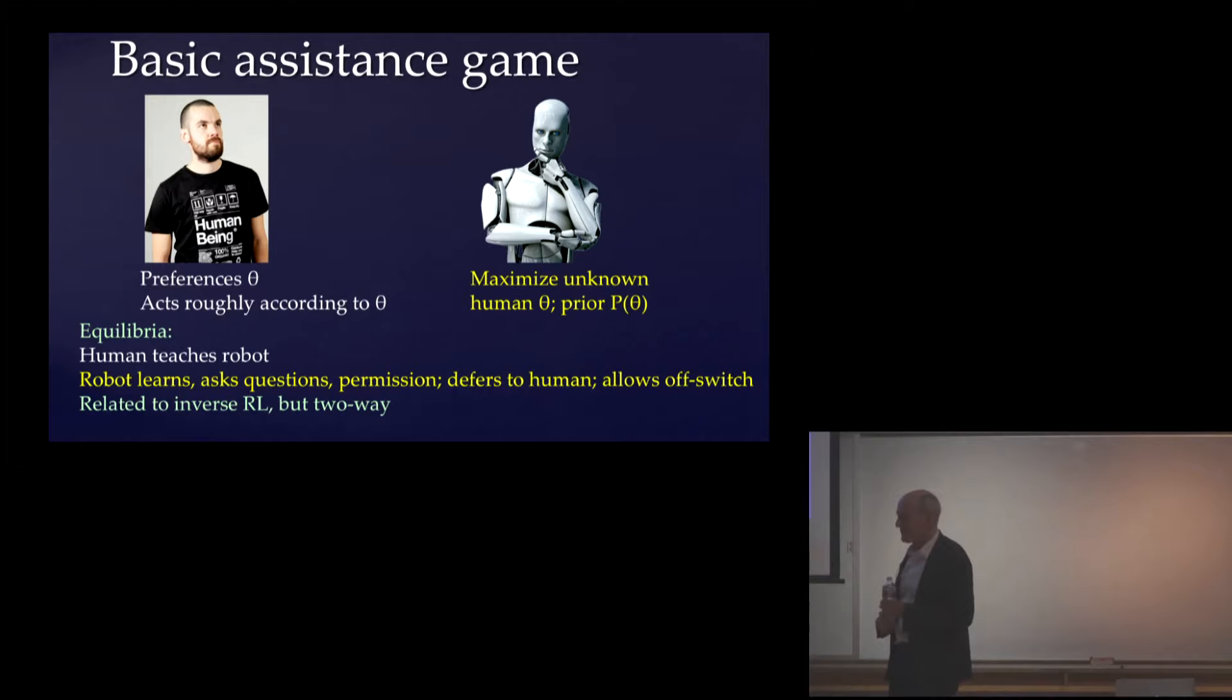So I'm going to talk about these assistance games. Remember the human is the one with the preferences. We'll call the preference theta generically. And we assume that the human acts according to theta. It doesn't have to be perfect or rational. And the machine has to maximize the human preferences and has some prior p of theta on what human preferences might be. And when you solve the equilibria, on the human side you see the human teaching the robot. Because the human wants the robot to learn more about theta so that the robot can be more useful. And the robot will learn, it'll understand the teaching behaviors of the human as conveying the preference information. It will ask questions. It will ask permission. It will defer to the human.